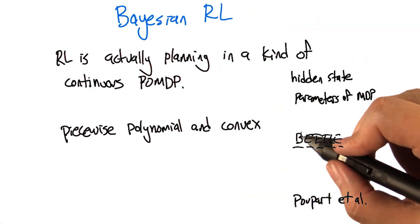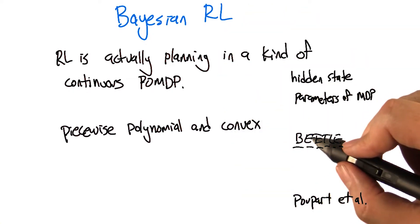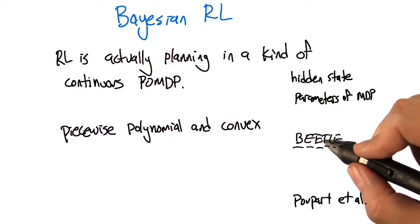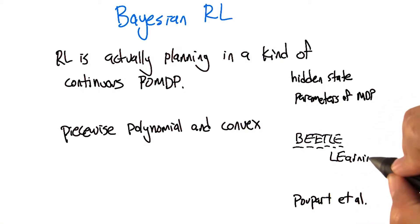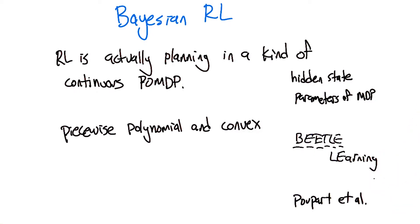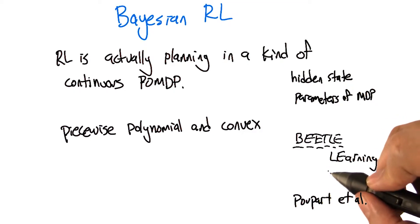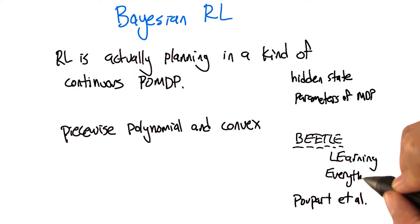Does BEETL stand for something? Bayesian exploration exploitation trade-off in learning. Which is cheating — I think we agree. But otherwise it would be BEETLE, which would be just way too hard to say. Bayesian exploration exploitation trade-off in learning everything — the E for everything. Yeah, and then that would be better, and I think I could forgive that.